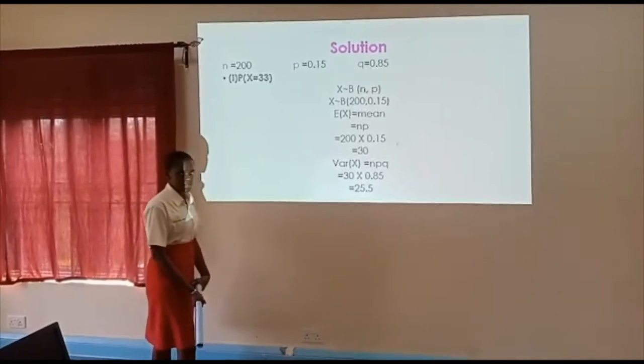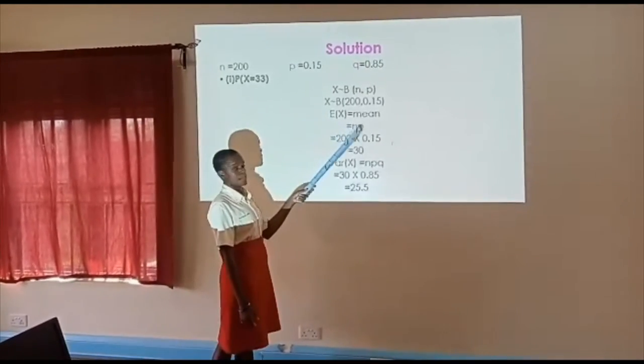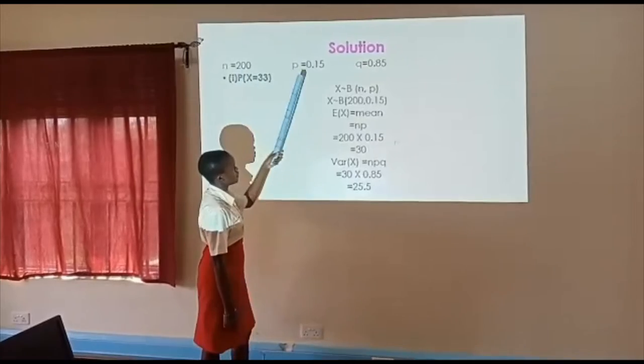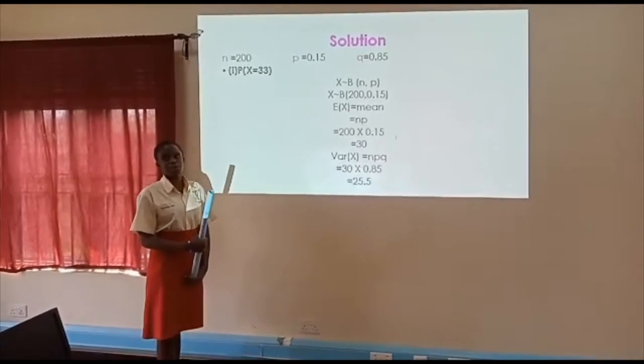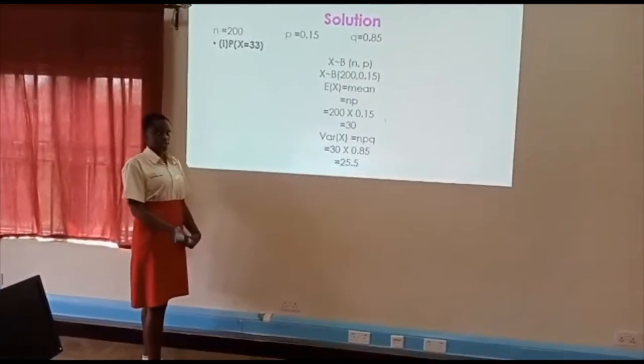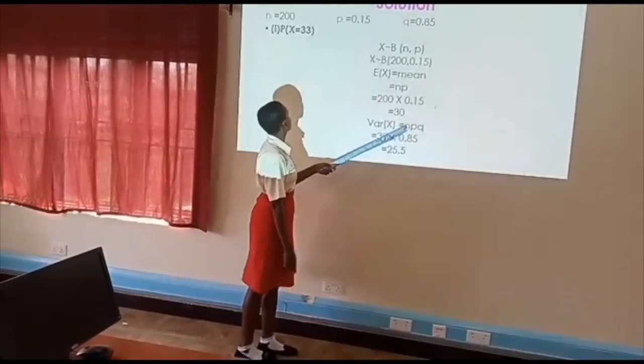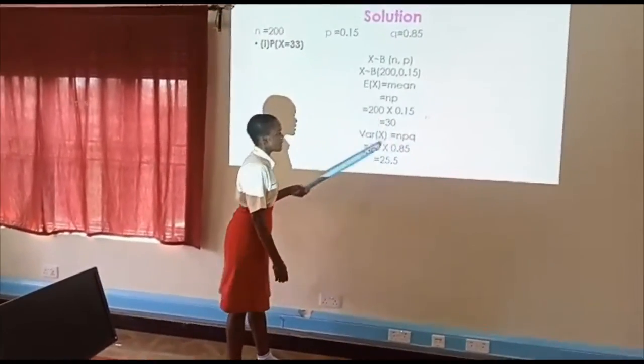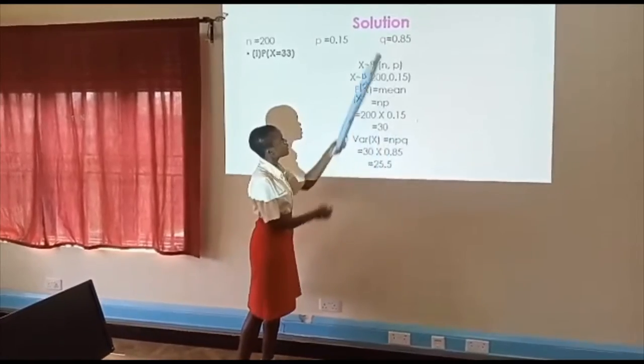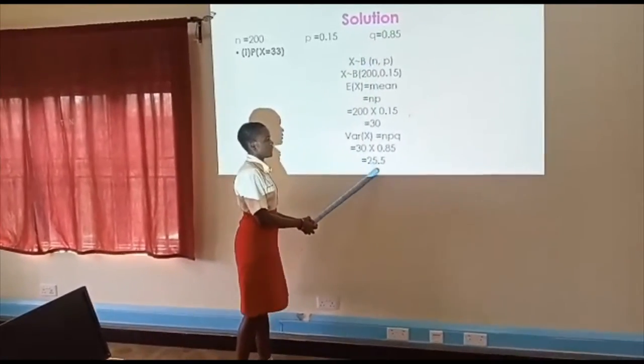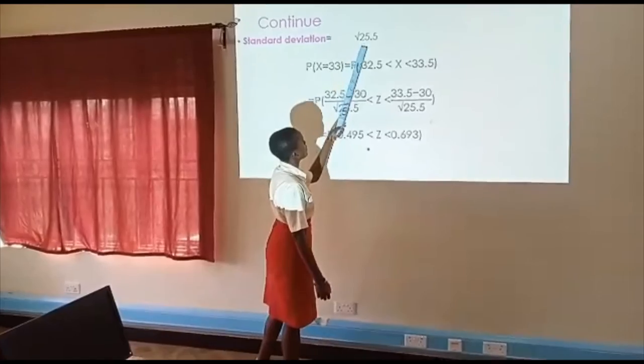We are going to find the mean. The mean np equals 30. We move on to find the standard deviation. But we cannot get standard deviation if we do not have the variance. Standard deviation is the square root of variance. So we first work out our variance by multiplying n, p, and q. 30 times 0.85 gives us 25.5. We move on to find the standard deviation, which is the square root of variance.